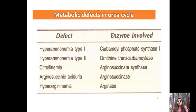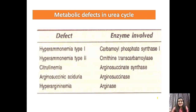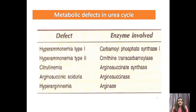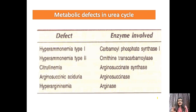Citrullinemia occurs due to deficiency of arginosuccinate synthase — without this enzyme, citrulline accumulates. Arginosuccinic aciduria occurs when arginosuccinate accumulates in the body. Hyperarginemia occurs due to arginase deficiency, causing arginine levels to increase in the blood.